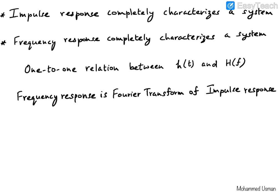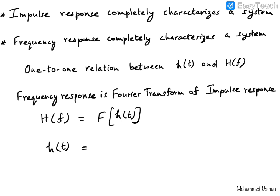It turns out that the frequency response is nothing but the Fourier transform of the impulse response. So we can write H(f) as the Fourier transform of h(t), and conversely, the impulse response h(t) is the inverse Fourier transform of the frequency response H(f). This means if we know the impulse response we can compute the frequency response and vice versa.